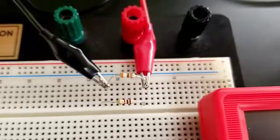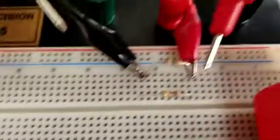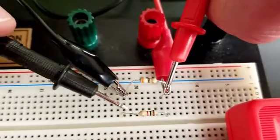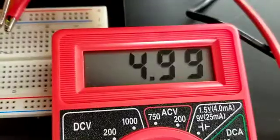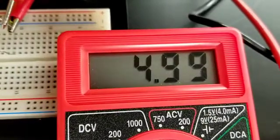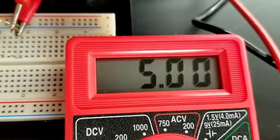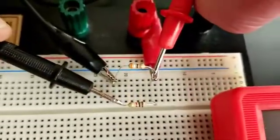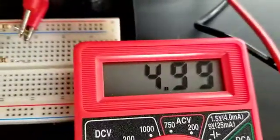So to measure voltage in parallel, touch the first meter lead to one end of the resistor, either one, and the other lead to the other end of the resistor, either resistor. We should read the supply voltage because voltage drops in parallel are the same. So either resistor will read the same voltage drop.